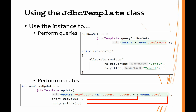To use the JDBC Template instance, all we've got to do is call an appropriate method passing in an SQL statement. In this example, we're going to call queryForRowSet — there's the SQL statement we want to use as the query, and it's going to return an SQL row set, which will behave in a very similar way to the result set we have already seen.